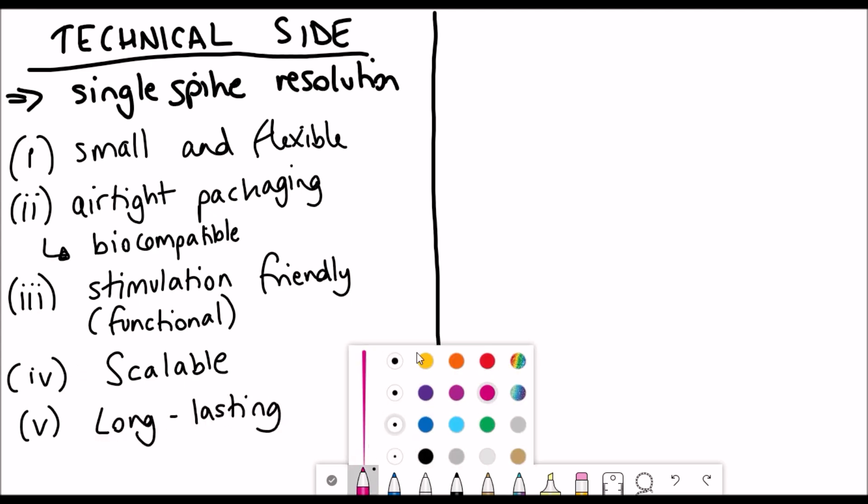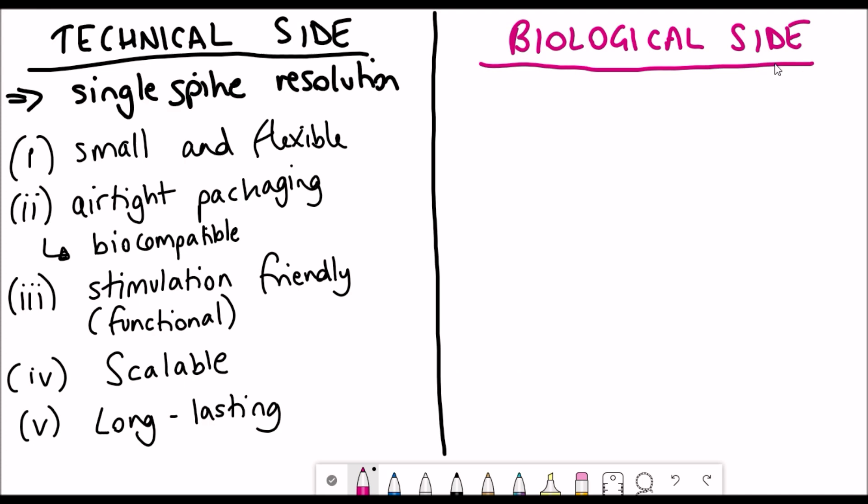These challenges are more focused on getting the device into the brain and then being able to detect the electrical signals. The second challenge comes from the biological side which is being able to interpret what the signals mean and this is where you need algorithms and correct interpretation of the signals.